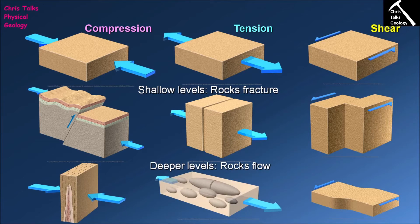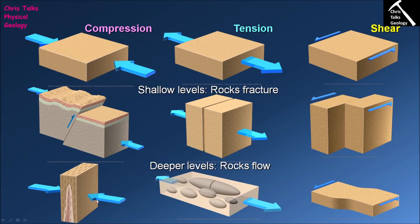At depths greater than 10 to 15 kilometers we move from the brittle zone into the ductile zone. Deformation here is accommodated by the rock flowing and deforming in a plastic fashion — we don't see the cracks we get in the upper brittle zone. When we compress rock in the ductile zone, it simply deforms like silly putty: squeeze it and it deforms in response to the stress, changing shape from a horizontal to a vertical square.